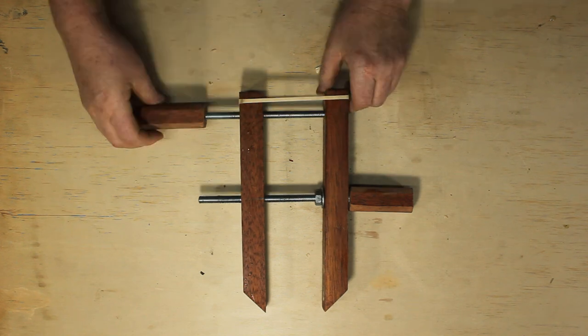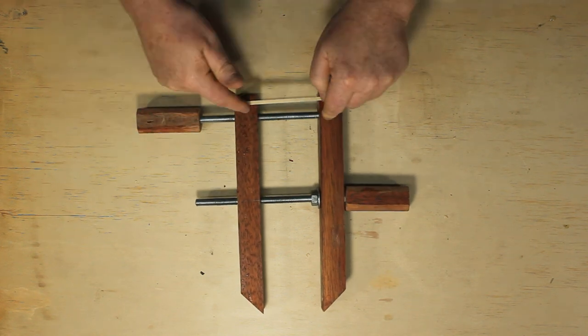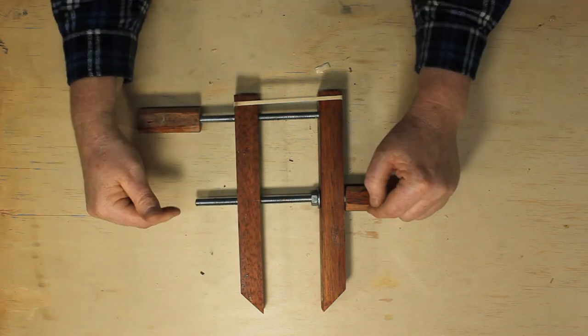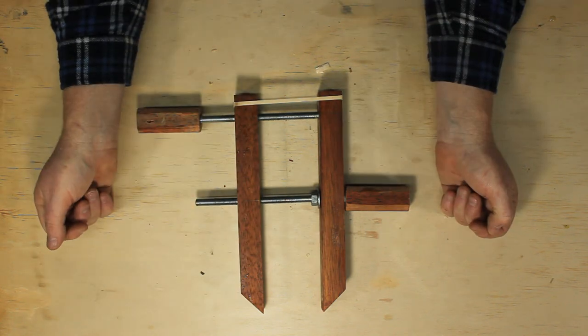This is a homemade hand screw clamp. It works very similar to a G clamp or an F clamp for clamping materials. We'll be making this in one of the upcoming projects.